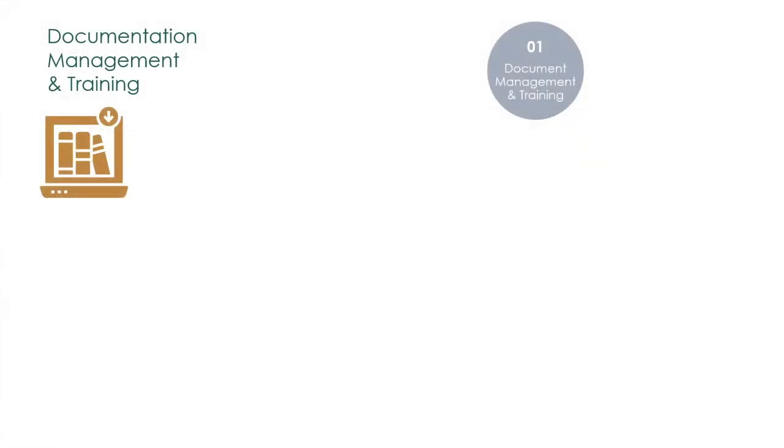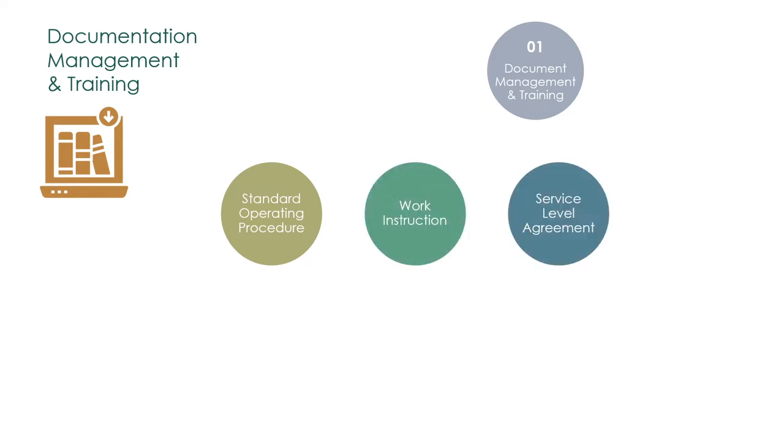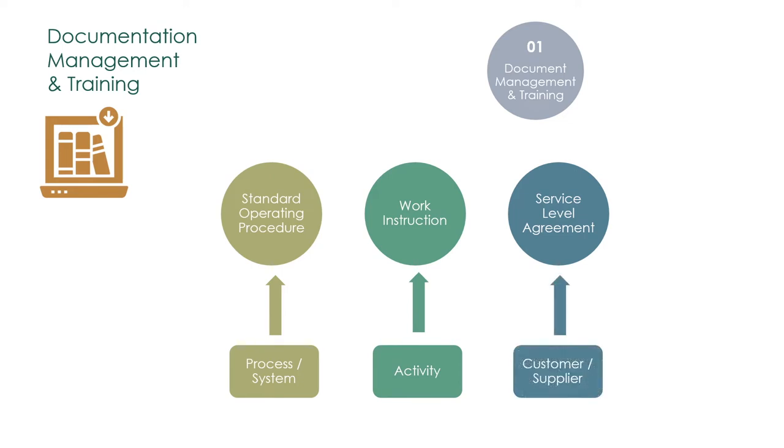There are three types of standard documents that are of particular interest in this loop. The Standard Operating Procedure, or SOP, the Work Instruction, and the Service Level Agreement, or SLA. The SOP describes how to operate a system or a process. The Work Instruction explains how to operate an activity. And the SLA defines the performance expectations between internal customers and suppliers.